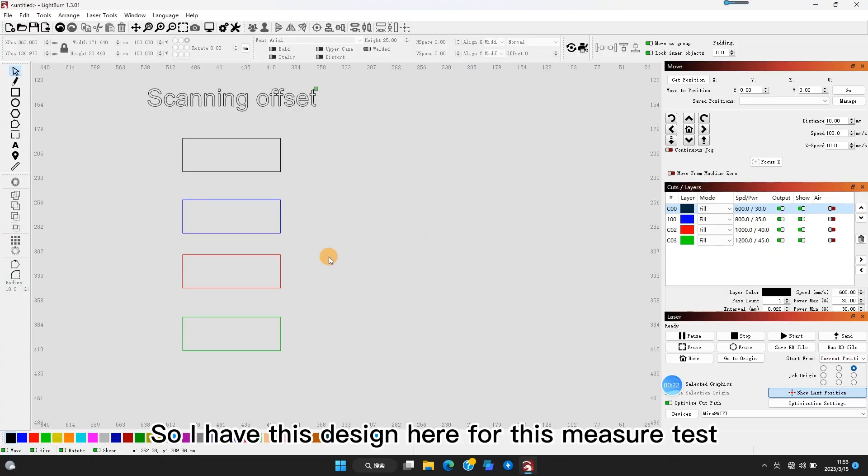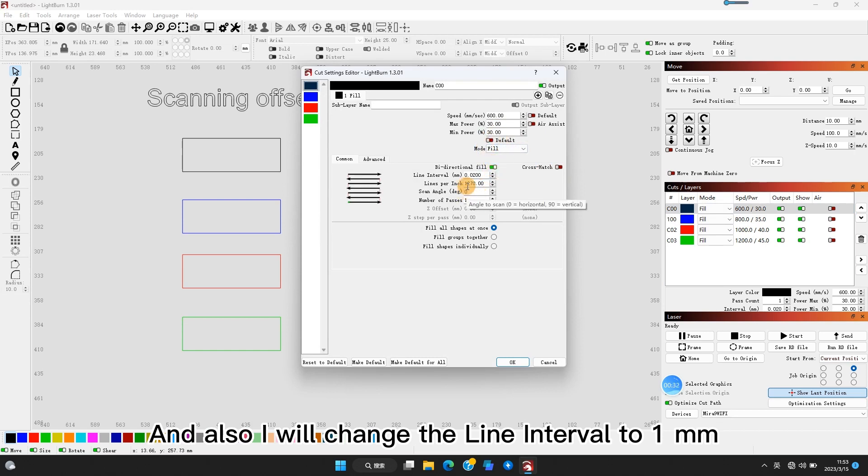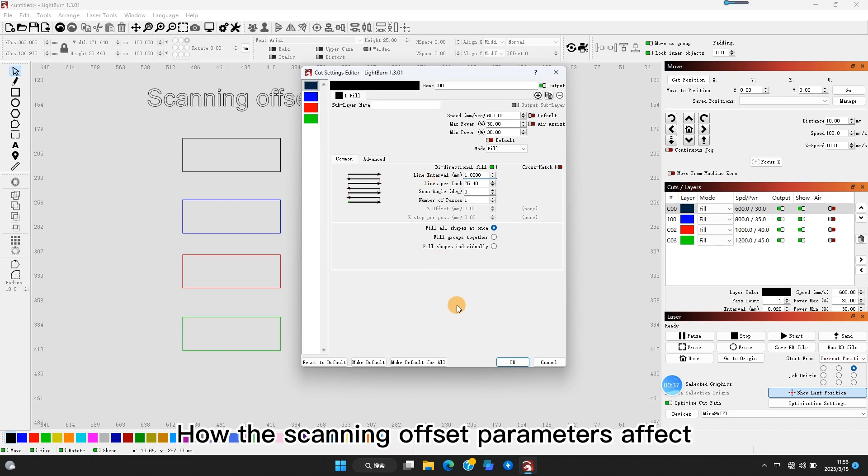I have this design here for the measurement test. They are just rectangles, but I'll choose fill. I'll also change the line interval to 1mm so we can observe how the scanning offset parameters affect the result of engraving.